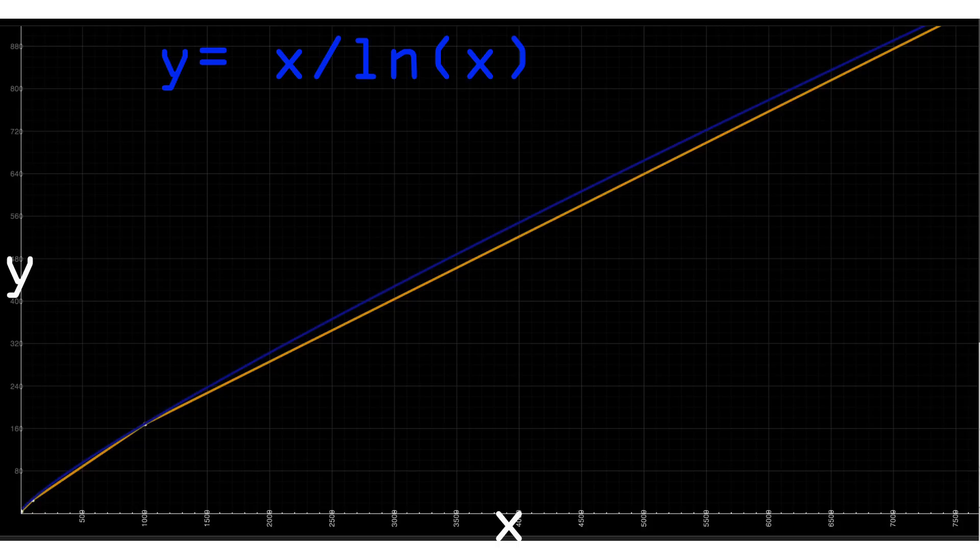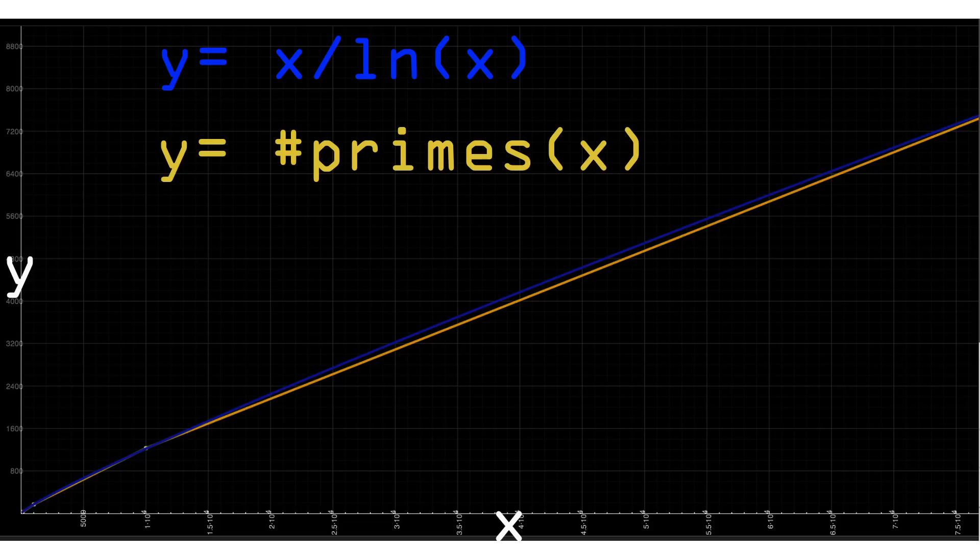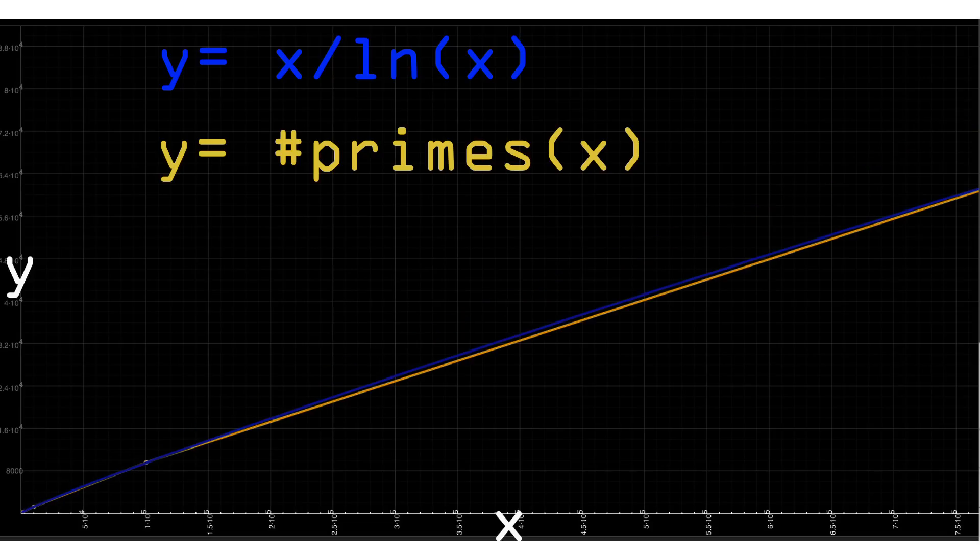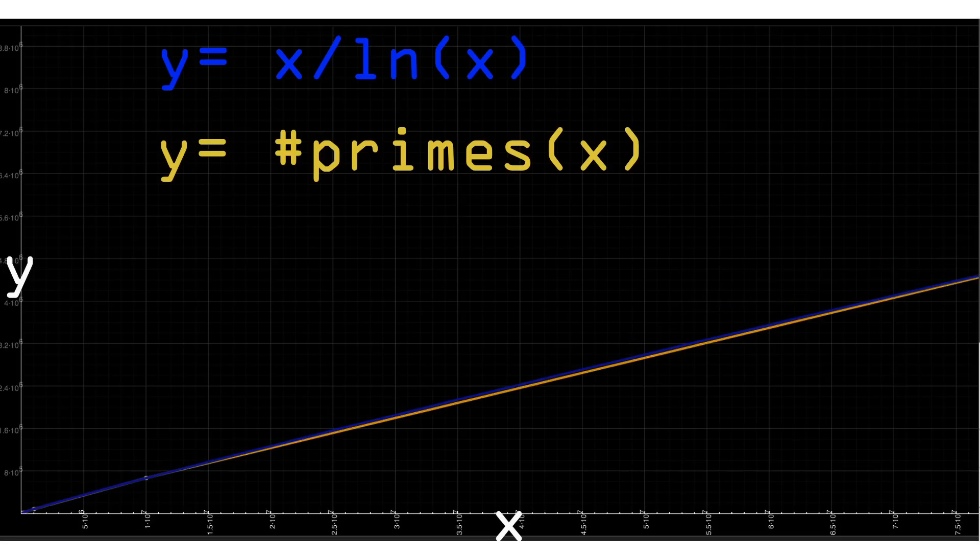Here is a graph of y equals x divided by ln(x) in blue, and in yellow is a plot of an actual count of primes. Notice as we zoom out these lines eventually overlap as we look to infinity.